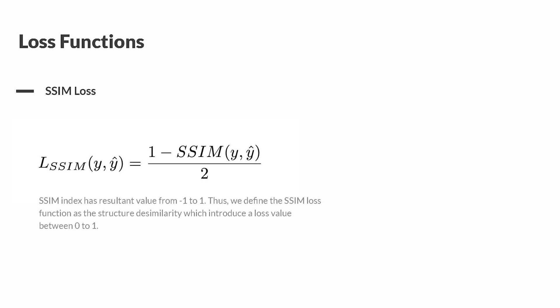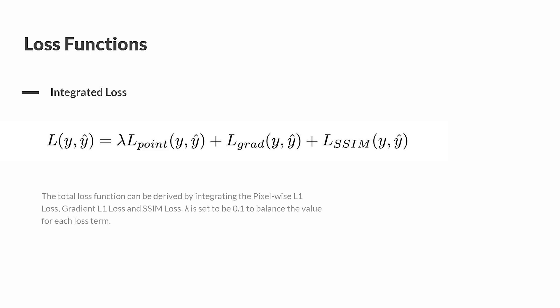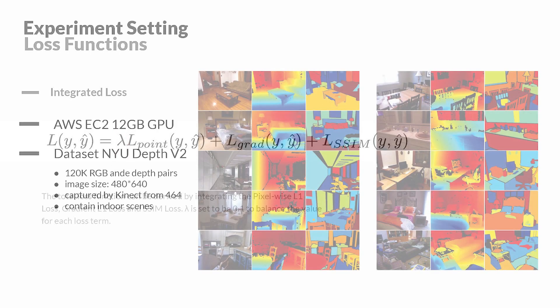Finally, we can integrate these three losses. And to balance the value between these terms, we need to introduce a lambda as 0.1 on the first loss.